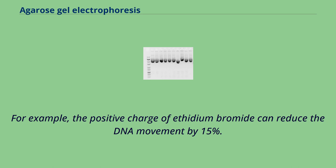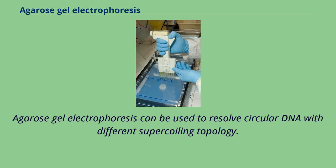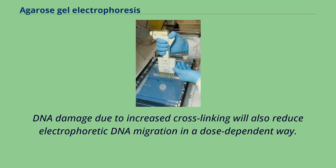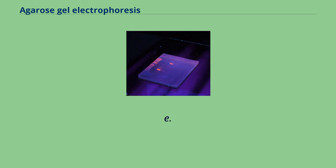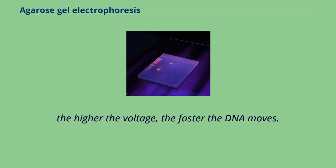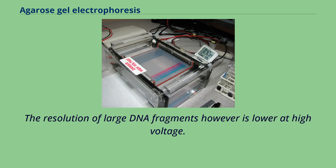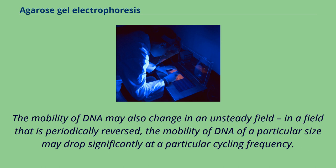Agarose gel electrophoresis can be used to resolve circular DNA with different supercoiling topology. DNA damage due to increased cross-linking will also reduce electrophoretic DNA migration in a dose-dependent way. The rate of migration of DNA is proportional to the voltage applied — the higher the voltage, the faster the DNA moves. However, the resolution of large DNA fragments is lower at high voltage. In a field that is periodically reversed, the mobility of DNA of a particular size may drop significantly at a particular cycling frequency.